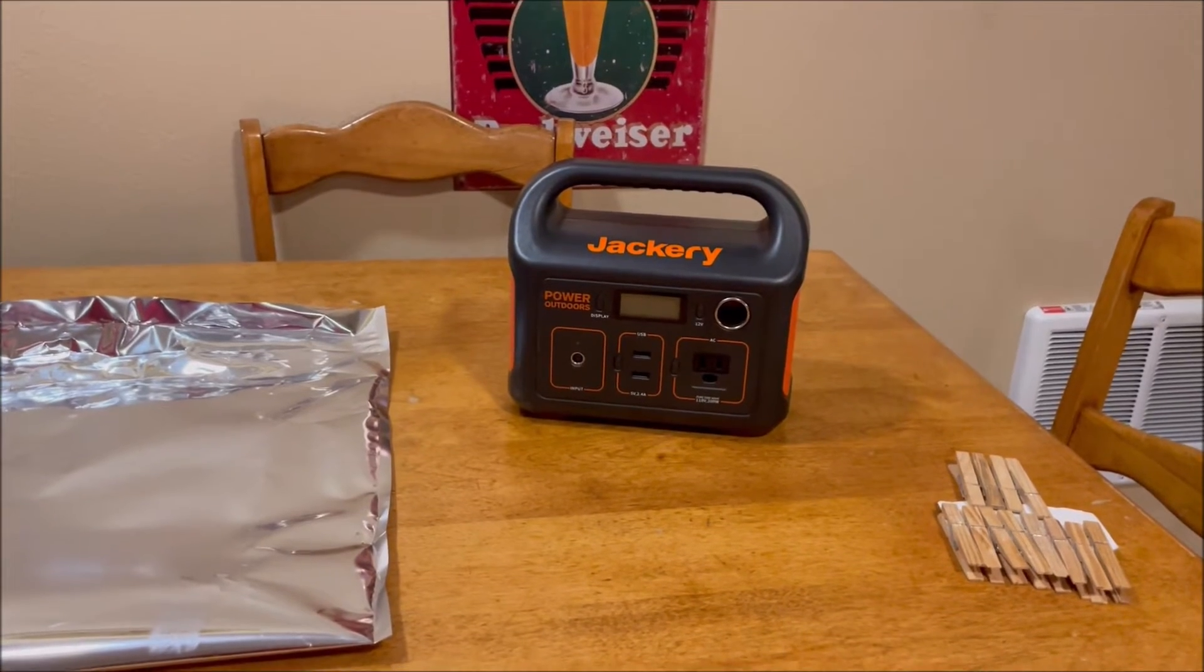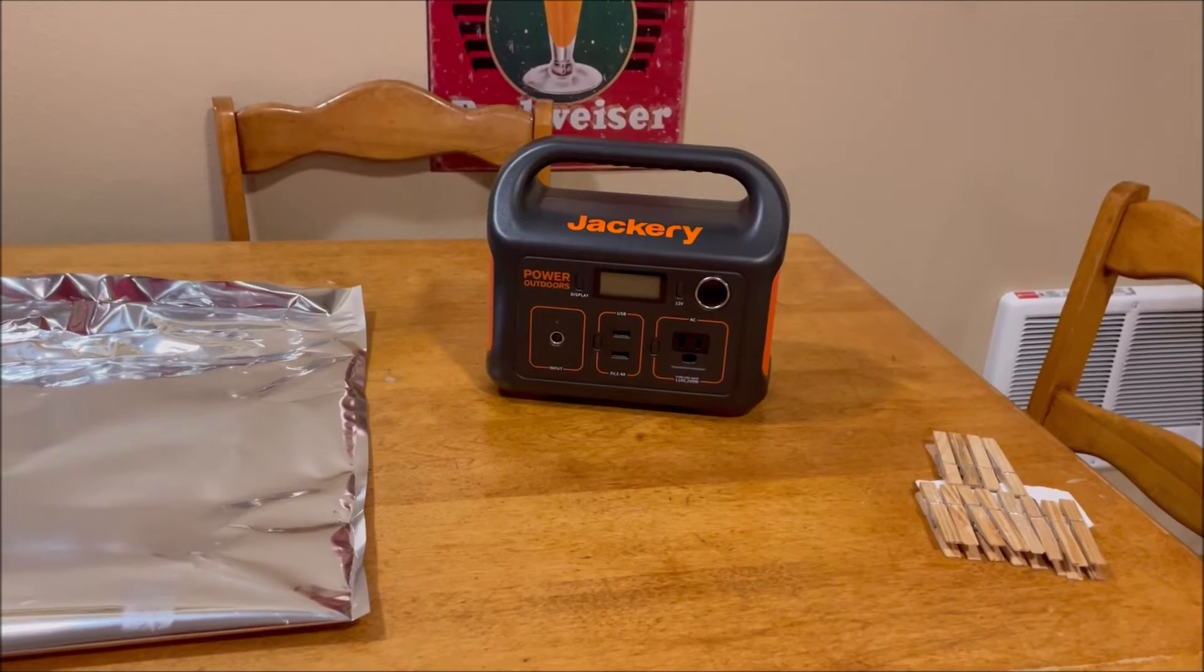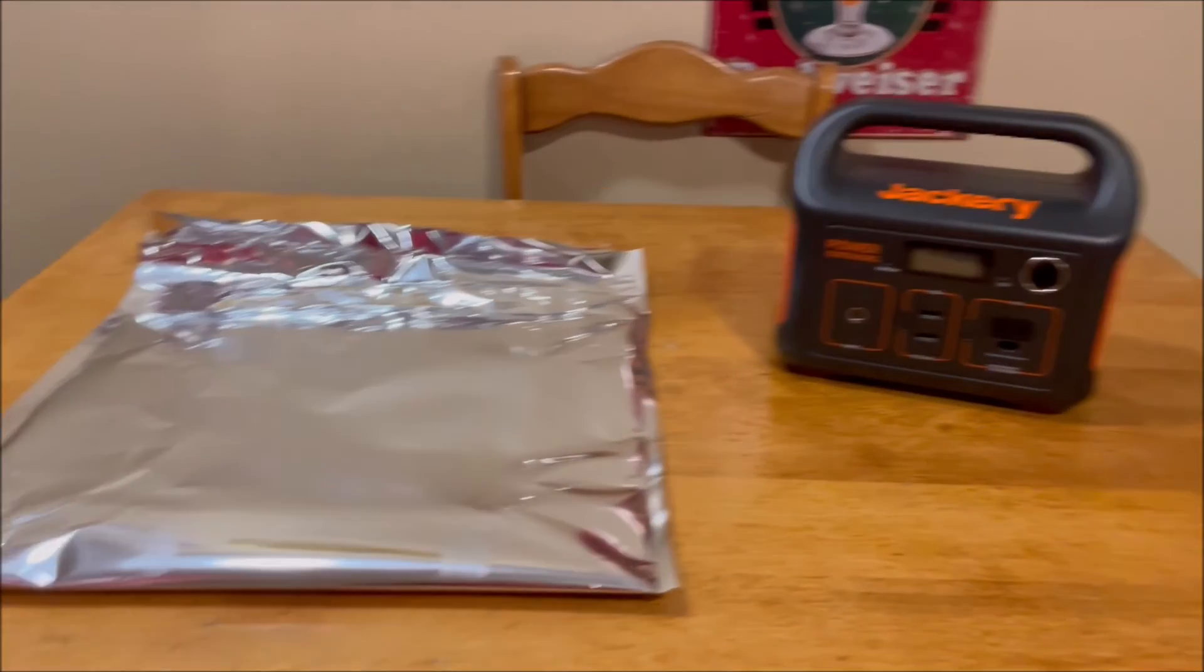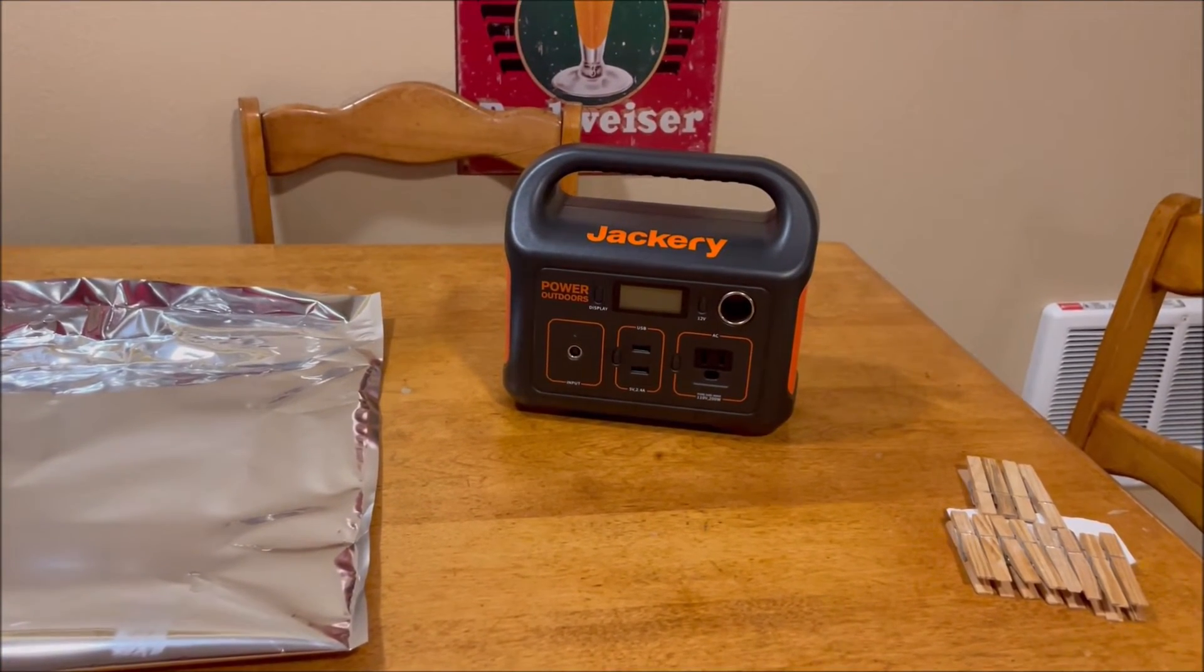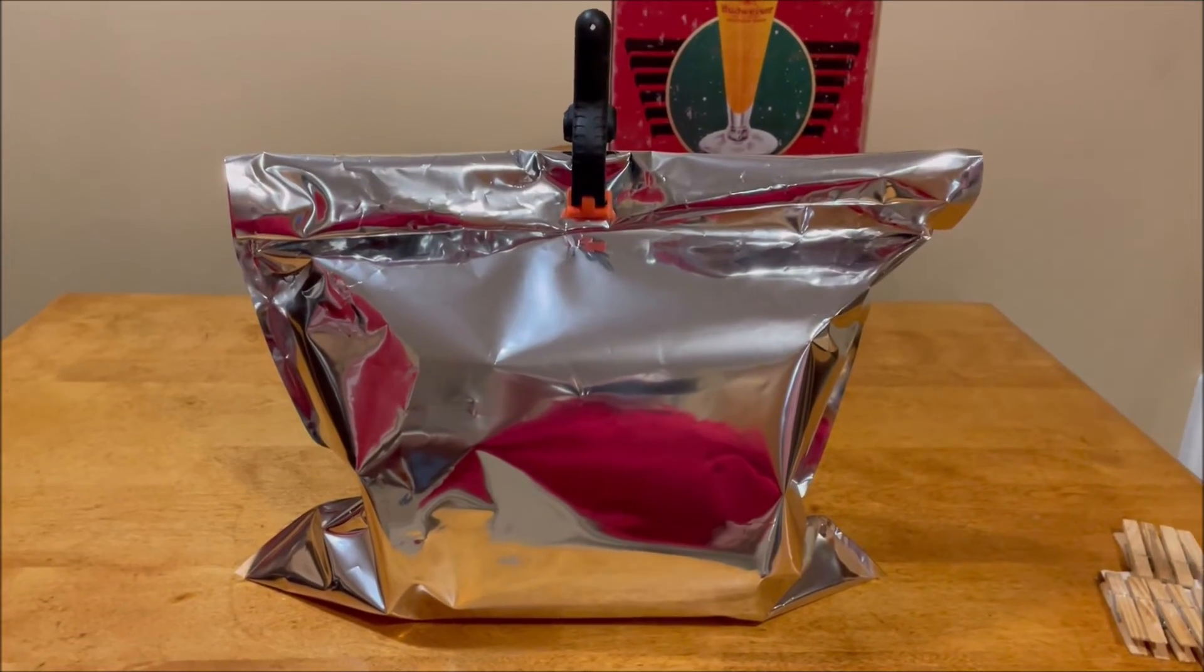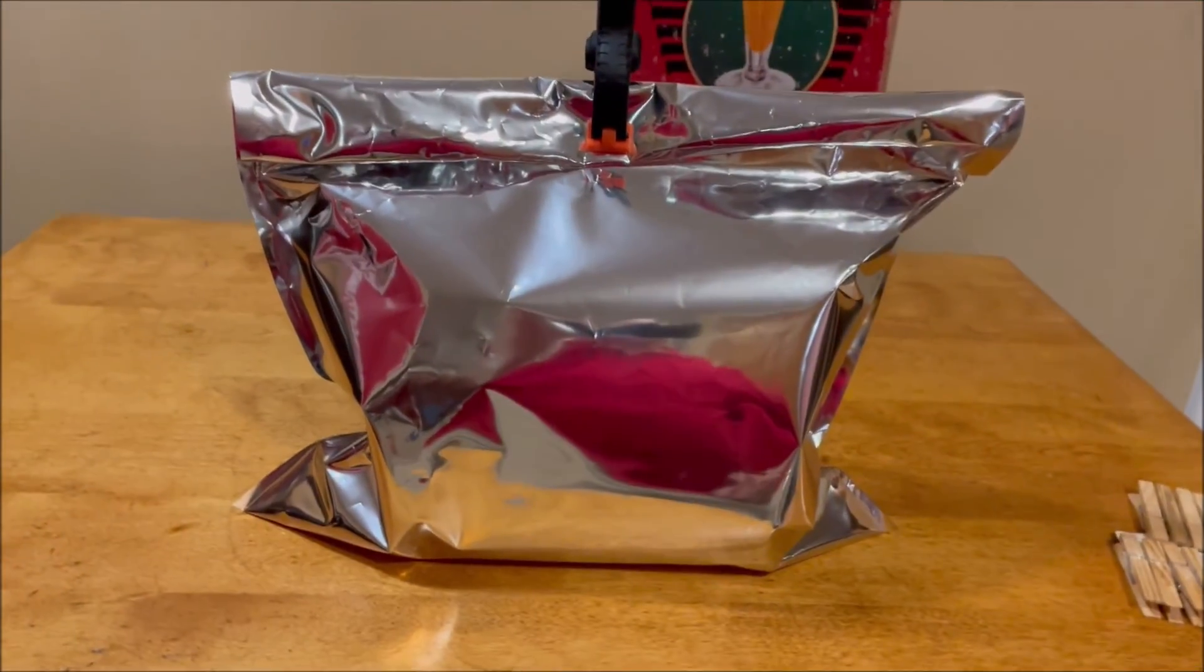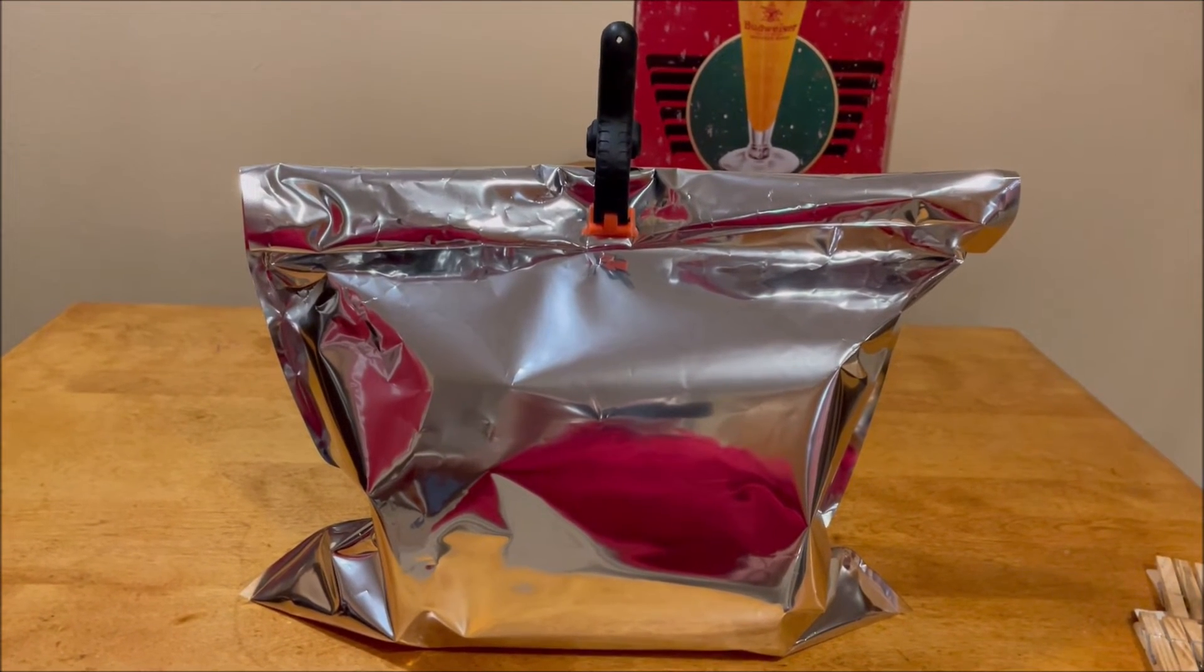Now we're down to the Jackery 290 which is about the same size as the 300, and we have a 16 by 18 bag. Let's get it in and get it closed up. We got it all in there and I got it clamped down with another woodworking clamp, which work real good and you can get them pretty cheap over at Harbor Freight.